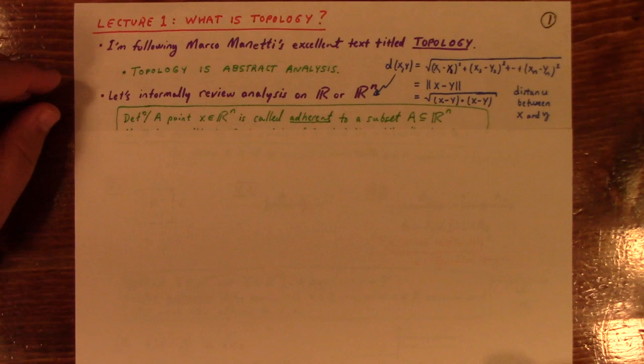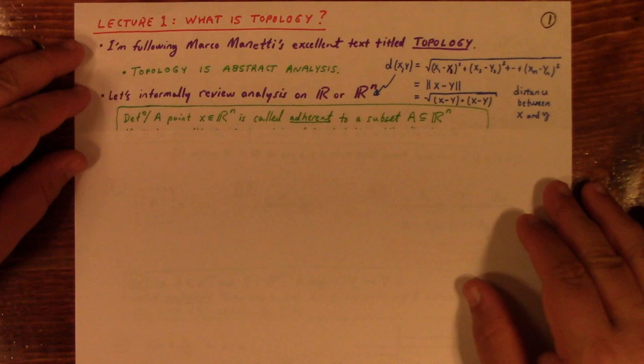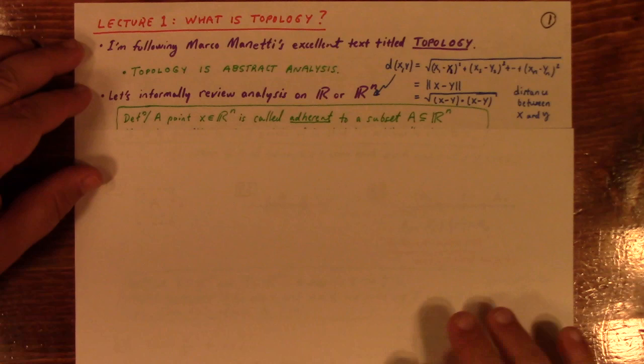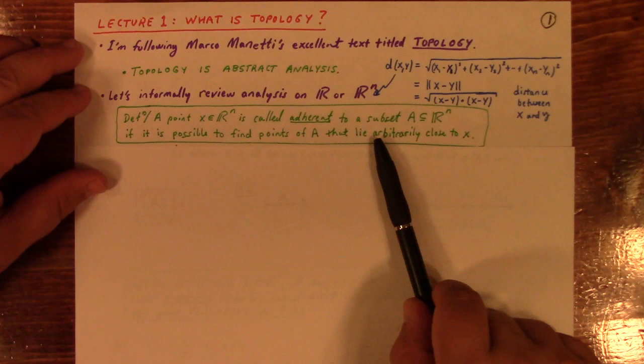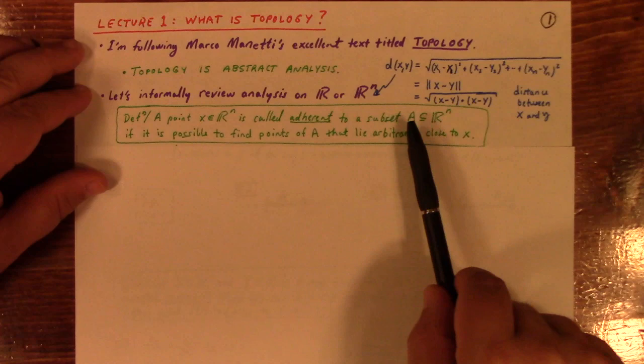So he recasts the study of topology in Euclidean space in terms of what he calls adherence. He says this: a point X in R^N is adherent to a subset A of R^N if it's possible to find points of A that lie arbitrarily close to X. Another way to say it is a point X is stuck to A if it's adherent.